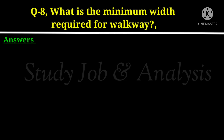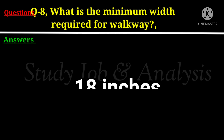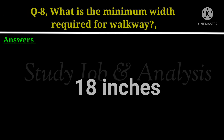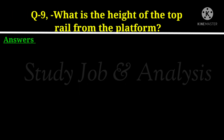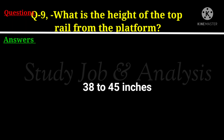Question number 8: What is the minimum width required for a walkway? Answer: 18 inches. Question number 9: What is the height of the top rail from the platform? Answer: 38 to 45 inches.